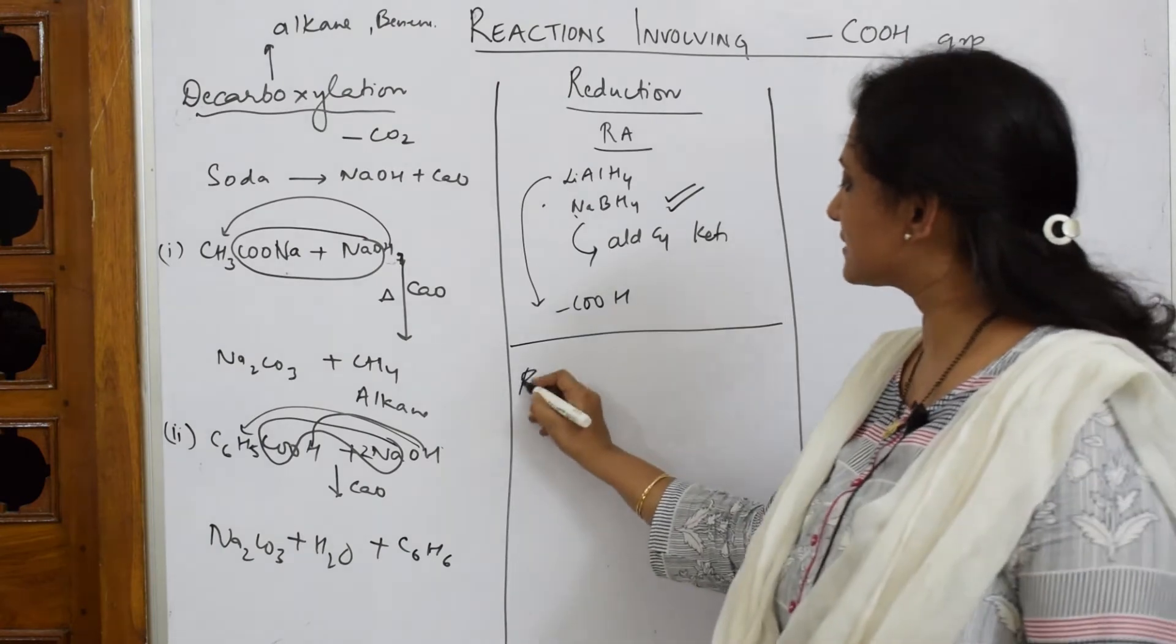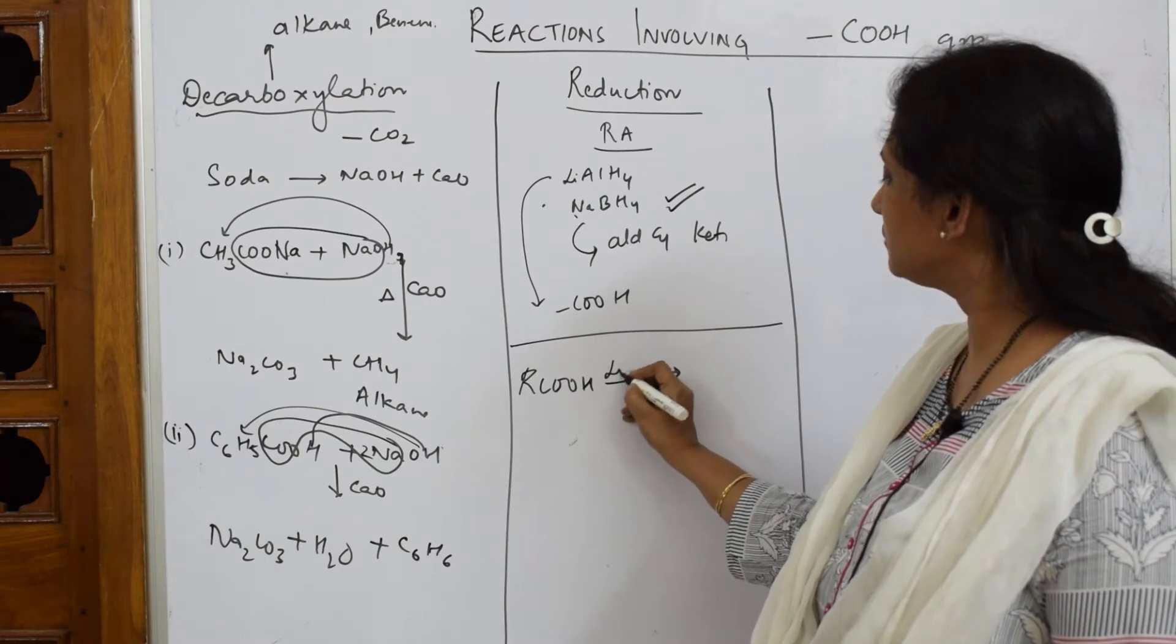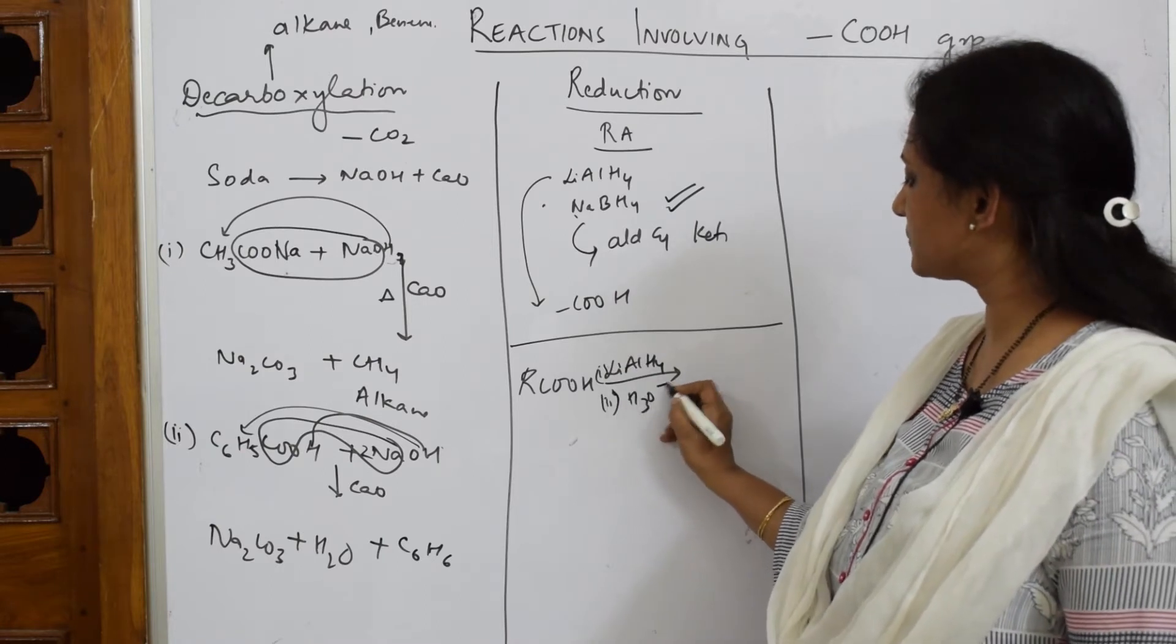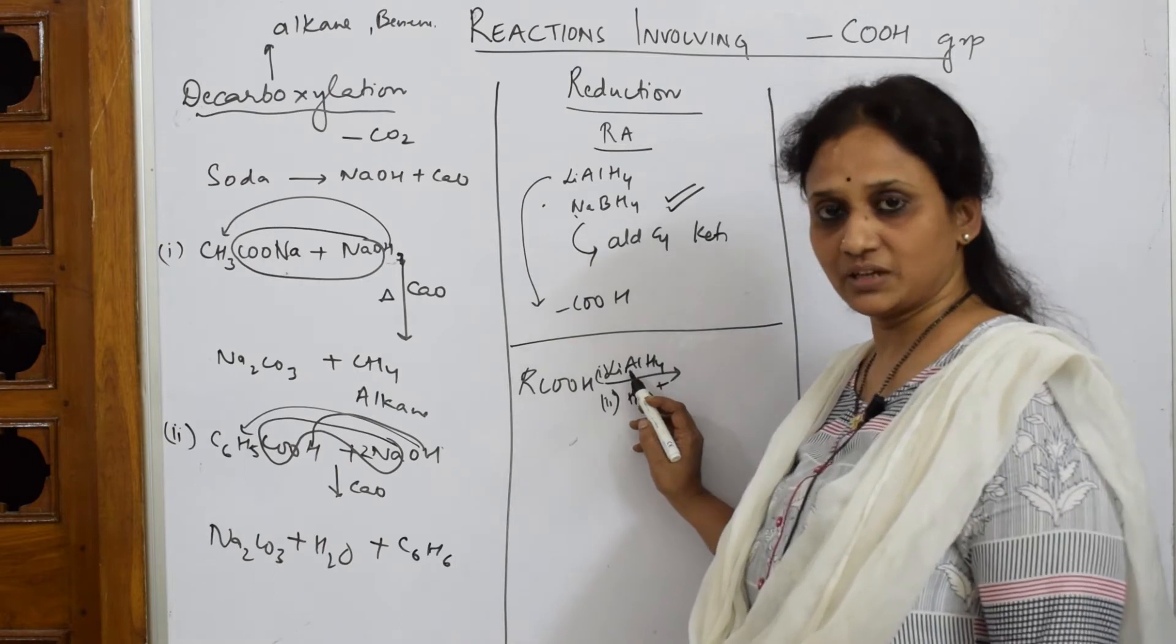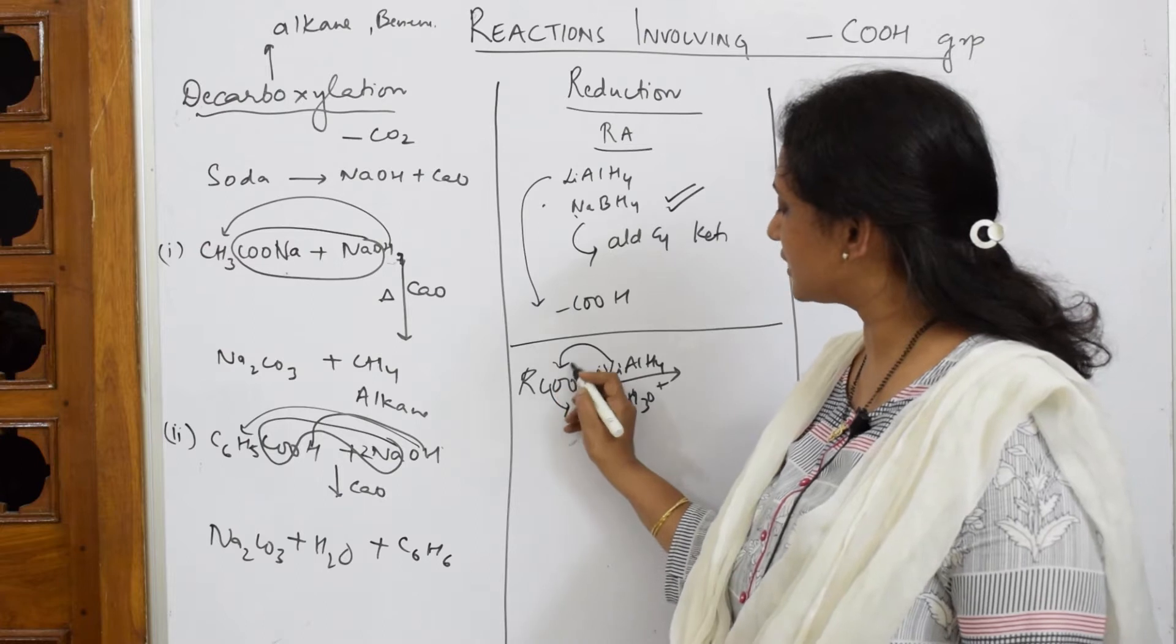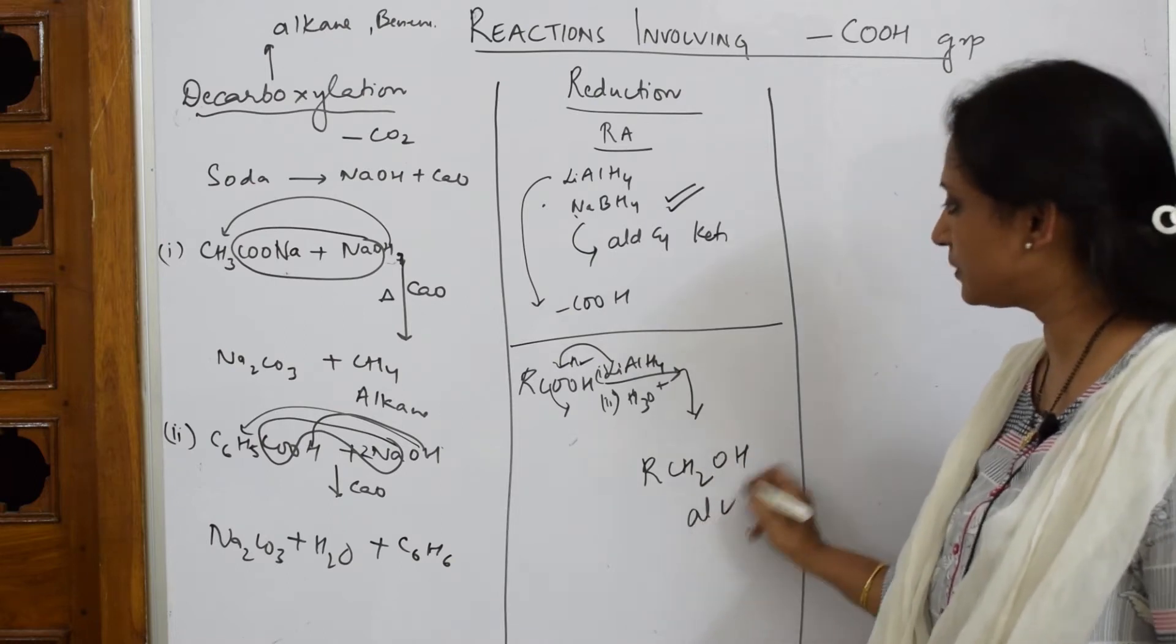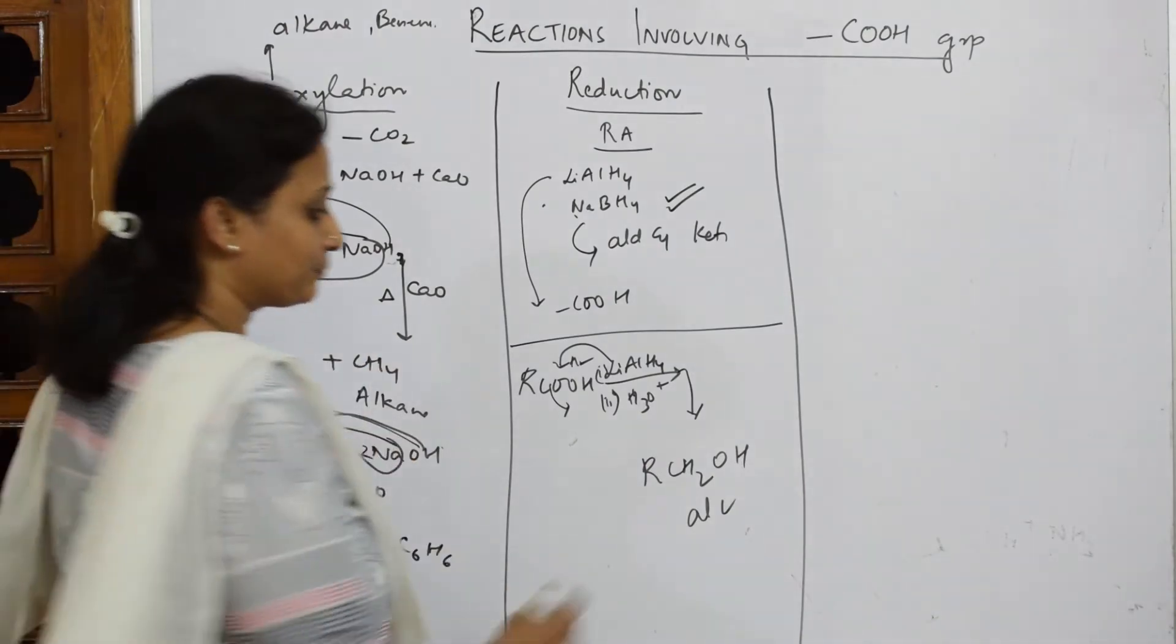When I take an acid RCOOH, I am going to introduce lithium aluminium hydride reducing agent in the presence of H3O+. The reducing agent has to add hydrogen and remove oxygen. It's going to remove this oxygen and add hydrogen. I get RCH2OH, which is an alcohol. Acids on reduction gives alcohol. I've got a primary alcohol prepared.